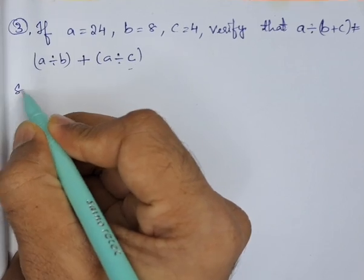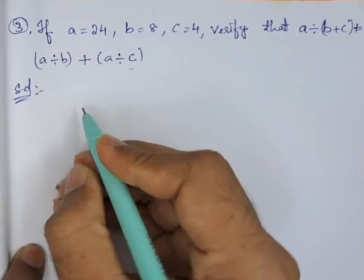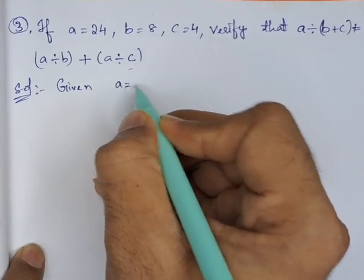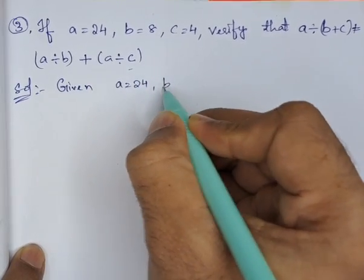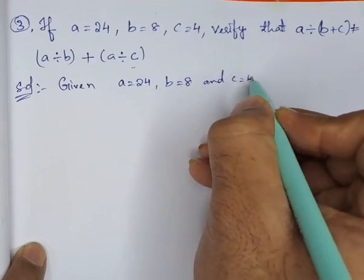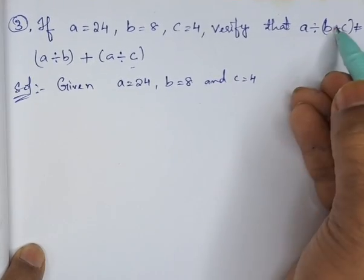Let us start this solution. First, we will write what is given: a equals 24, b equals 8, and c equals 4. To check whether this is not equal, first we will take LHS.